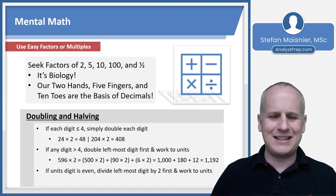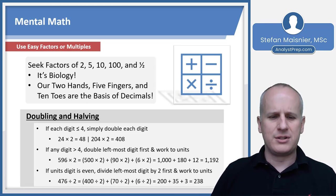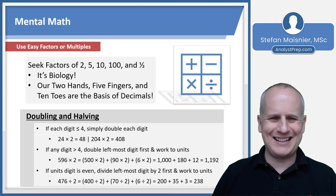And if the unit's digit is even, you can actually divide your leftmost digit by two and then work towards the units as well. So for instance, 476 divided by two, well, I could divide 400 by two, add that to 70 divided by two, add that to six divided by two. So I know that 476 divided by two is 200 plus 35 plus three, which is going to give me 238. And of course, if your unit's digit is not even, you end up with a half.